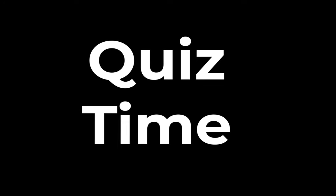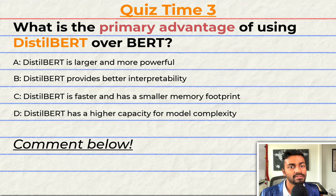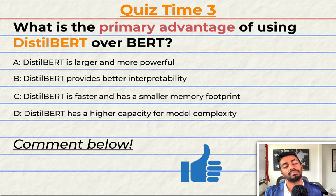Quiz time! All right, this is going to be a fun one. What is the primary advantage of using DistilBERT over BERT? A. DistilBERT is larger and more powerful. B. DistilBERT provides better interpretability. C. DistilBERT is faster and has a smaller memory footprint. Or D. DistilBERT has a higher capacity for model complexity. Comment your answer down below and let's have a discussion. And if you think I do deserve it, please do consider giving this video a like because it'll help me out a lot. Now that's going to do for quiz time and pass three of the explanation of the video. But before we go, let's generate a summary.